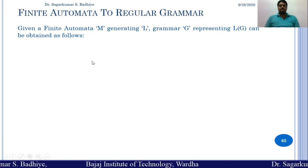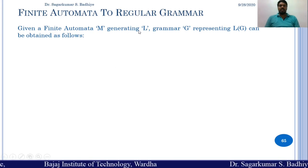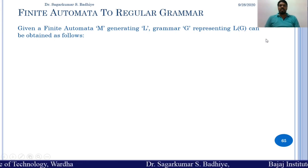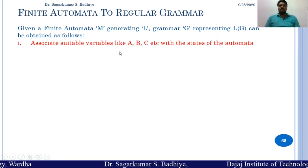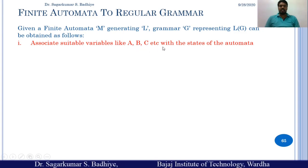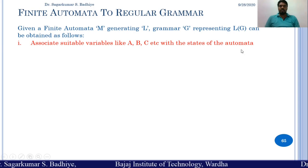Suppose a finite automata M is given which is generating a language L, then grammar G representing the language L(G) can be obtained as follows. The first step is to associate suitable variables like A, B, C, etc. with all the states of the automata.